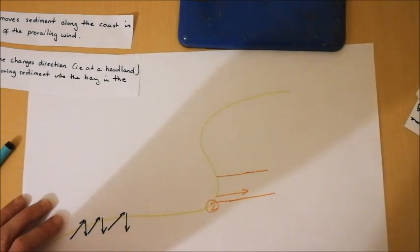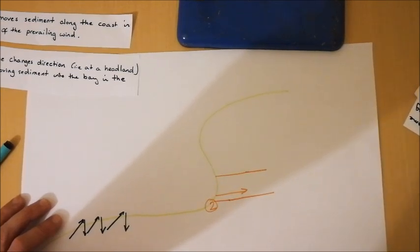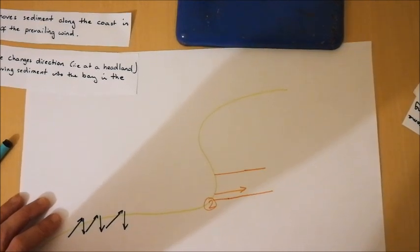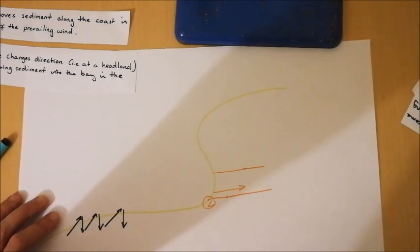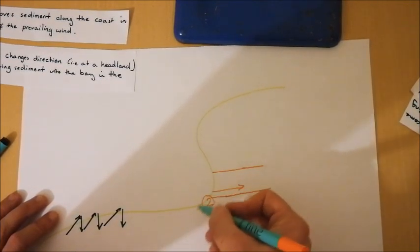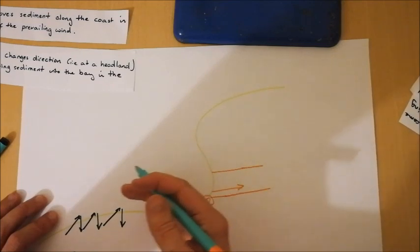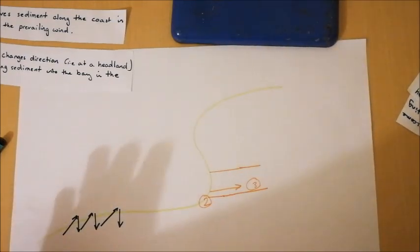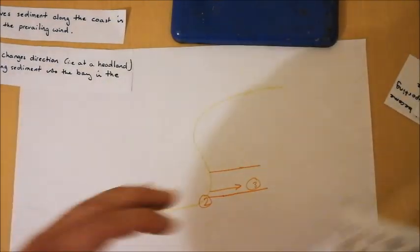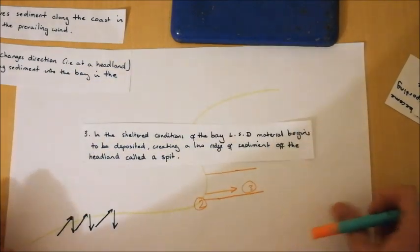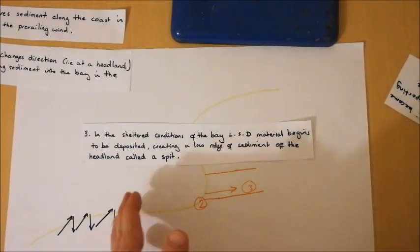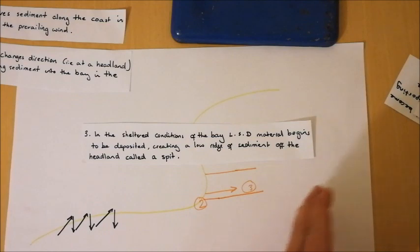Now this bit of land here is going to be pretty mobile. It's not going to be particularly substantial, low-lying. Maybe maximum a metre or so above sea level and only a few metres wide. And that sediment will be being moved along by longshore drift along to the end of the spit, meaning that this ridge grows out. So again, what we can do is put number three there. In the sheltered conditions of the bay, longshore drift material begins to be deposited, creating a low ridge of sediment off the headland called a spit. And that spit will carry on growing as more and more sediment is moved by longshore drift across the coastline.